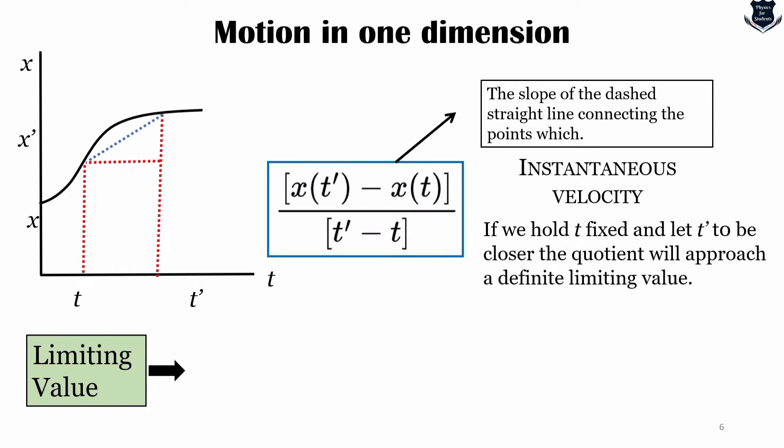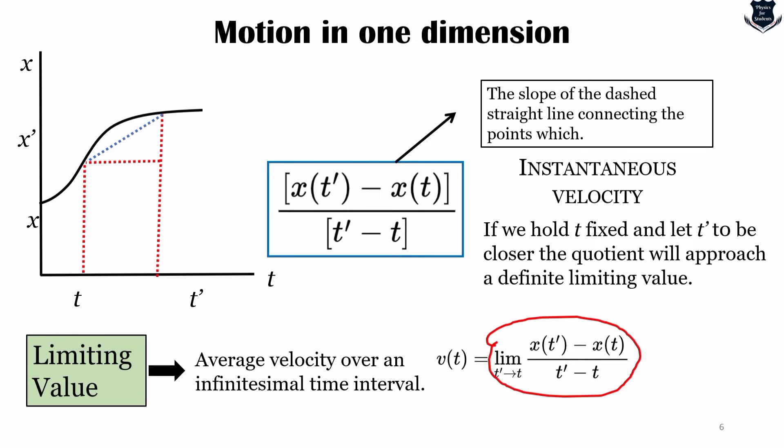This limiting value, which may be thought of as the average velocity over an infinitesimally small time interval which includes the time t, is actually called the instantaneous velocity. This equation, the right-hand side, is called the derivative of x with respect to t, and it is quite often denoted by dx/dt, so v = dx/dt.